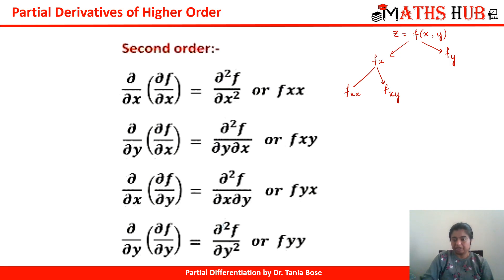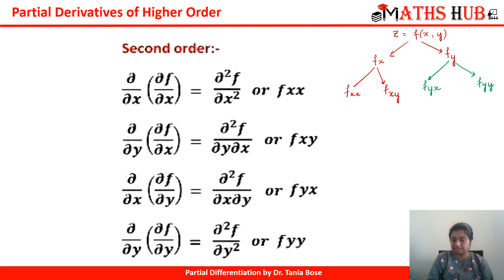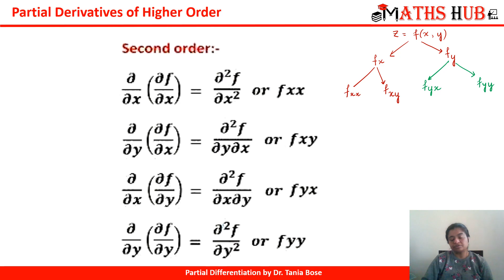Similarly with fy, we can take its derivative with respect to x to get f of yx — that is ∂/∂x of (∂f/∂y) = ∂²f/∂x∂y. And f of yy is ∂/∂y of (∂f/∂y) = ∂²f/∂y². These are all the second order derivatives from z = f(x, y). The rules of differentiation are the same as before — you just keep all other variables constant when partially differentiating.